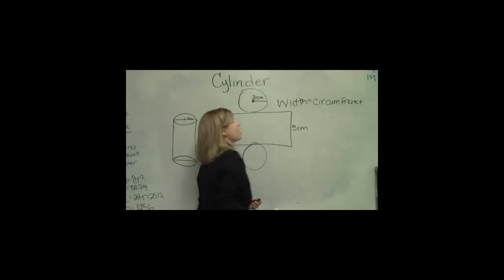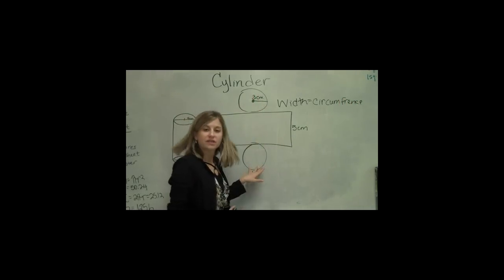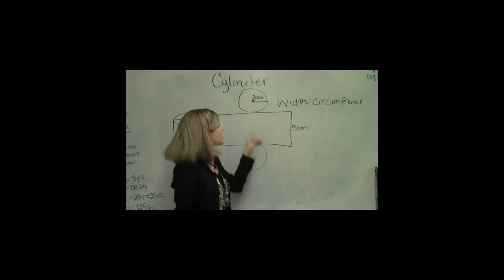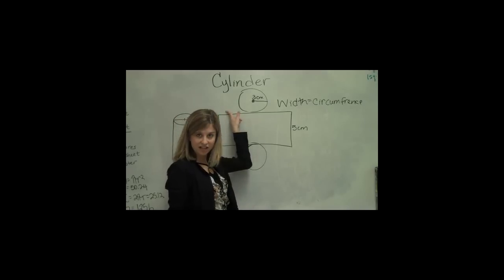So, again, all I have to do is find the area of all the different shapes, add them together. So if I find the circumference, I can find this missing side.